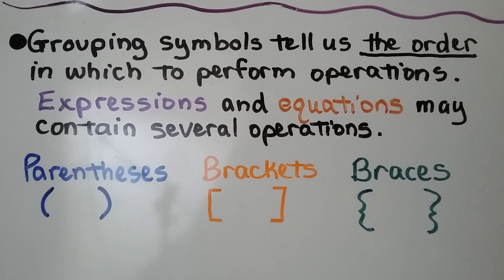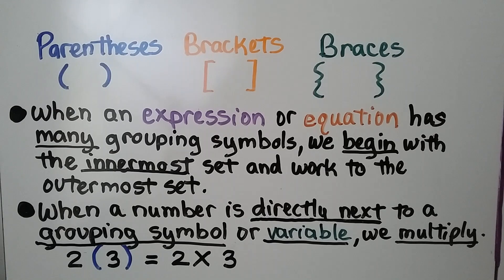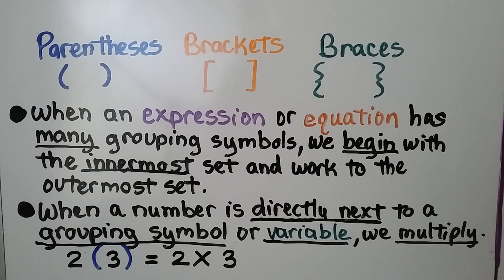Grouping symbols tell us the order in which to perform operations. Expressions and equations may contain several operations. The grouping symbols are parentheses, brackets, and braces. When an expression or equation has many grouping symbols, we begin with the innermost set and work to the outermost set. When a number is directly next to a grouping symbol or variable, we multiply.